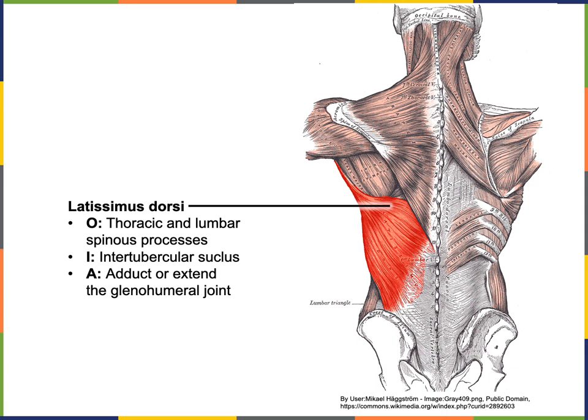Latissimus dorsi has its origin from the spinous processes of the thoracic and lumbar vertebrae, in a band of connective tissue known as the lumbodorsal fascia or thoracodorsal fascia. The insertion of latissimus dorsi is on the humerus at the intertubercular sulcus. The action of latissimus dorsi is to adduct or extend the glenohumeral joint.